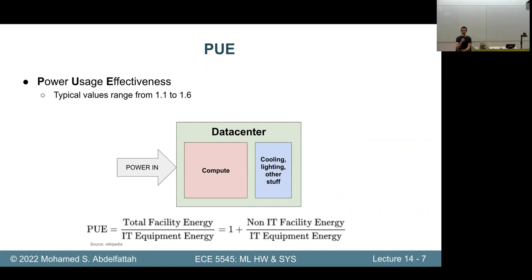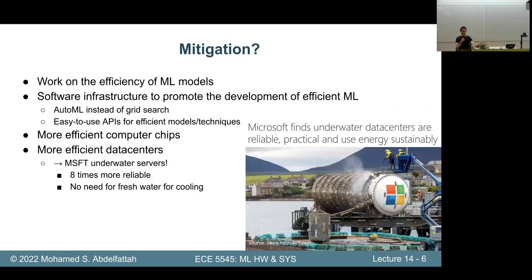It's eight times more reliable but eight times less serviceable. Data center schedulers can easily skip machines that don't work for many workloads. The reason for the reliability wasn't just being underwater — they filled the airtight tube with nitrogen instead of regular air containing oxygen, which decreased corrosion in cables. There were also no humans around to bump into machines. Being eight times more reliable actually justifies the cost of producing these expensive airtight tubes.